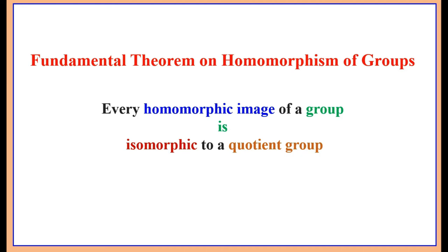An isomorphism is a bijective homomorphism defined as a morphism which has an inverse that is also a morphism. Homomorphisms are effective in analyzing and calculating algebraic systems as they enable one to recognize how intimately distinct systems are associated.